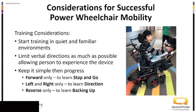For example, I've had individuals where we started as simple as a button on a tray in front of them — when they hit that button, they go forward — and we just start with forward until they get the idea of stop and go. Then we add directional components, then reverse. Keep it simple and progress over time. They don't have to be independent and jump right into a specific drive control.